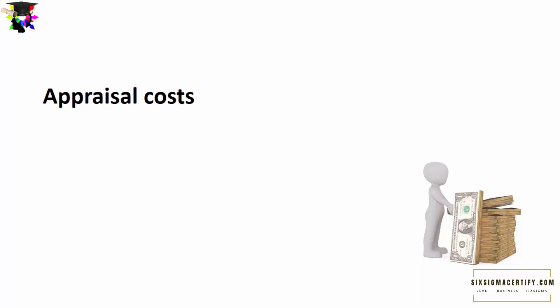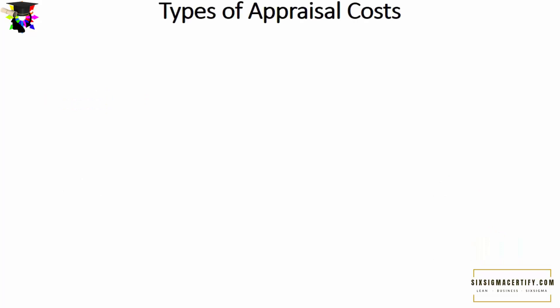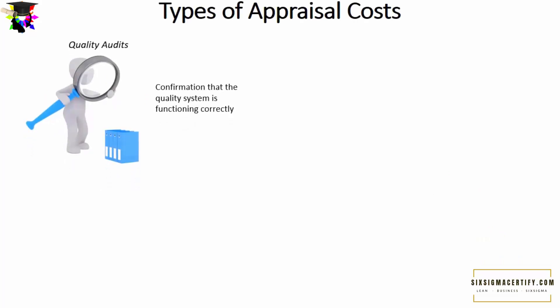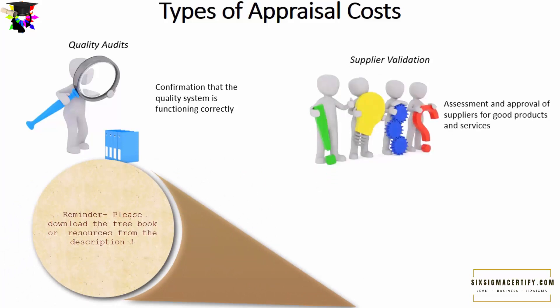The second major cost of good quality is the appraisal cost. Appraisal cost is associated with measuring and monitoring activities related to quality, and with evaluating purchased materials, processes, products, and services to ensure they conform to specifications. The first type of appraisal cost is quality audits, which confirm that the quality system is functioning correctly. Audits can be in-house or external.